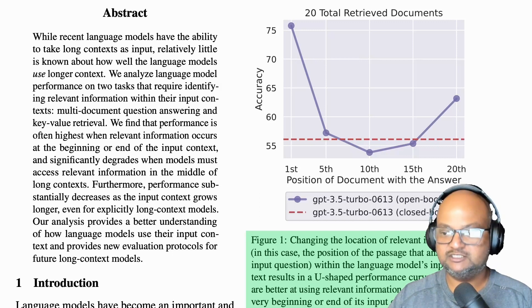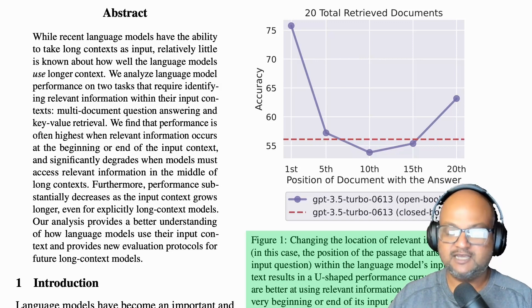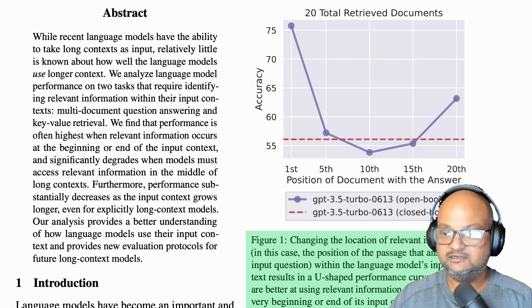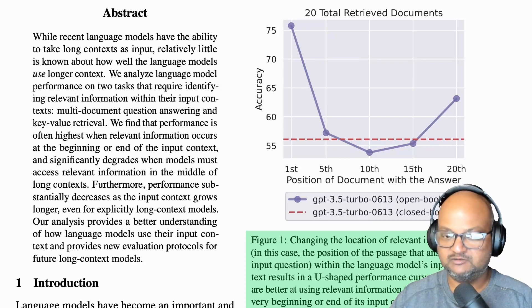This means that if the document you're asking a question about happens to be near the beginning or near the end of this really large context window, then the accuracy is fairly high. But if that document happens to be in the middle, then the accuracy falls by a lot — in fact, it's worse than the red line, which is the accuracy of a bare prompt without any of these documents, the closed book case, so to speak.